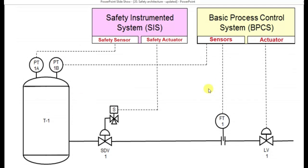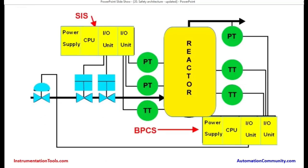This is a small part of a P&ID of the project, wherein a reactor has both pressure transmitter (PT) and temperature transmitter (TT). The TT is going to the BPCS — basic process control system — to the input-output card, and from the output card the signal goes back to the control valve to do the pressure control of the process.